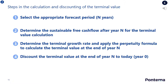The third step in performing a discounted cash flow valuation is to calculate and discount the terminal value. This step has four key tasks, as shown in the slide: firstly, to select the appropriate forecast period, or N, number of years; secondly, to determine the sustainable free cash flow after year N for the terminal value calculation; thirdly, to determine the terminal growth rate and apply the perpetuity formula to calculate the terminal value at the end of year N; and lastly, to discount the terminal value at the end of year N to today.